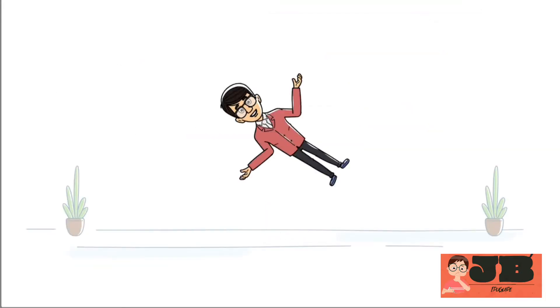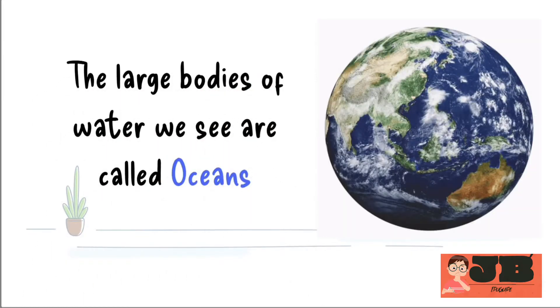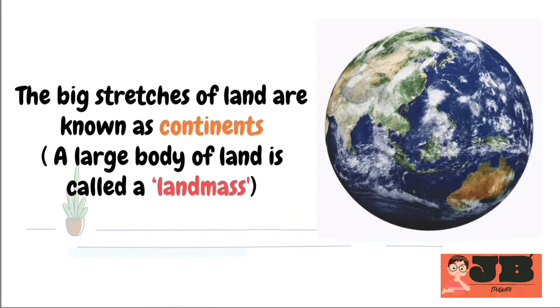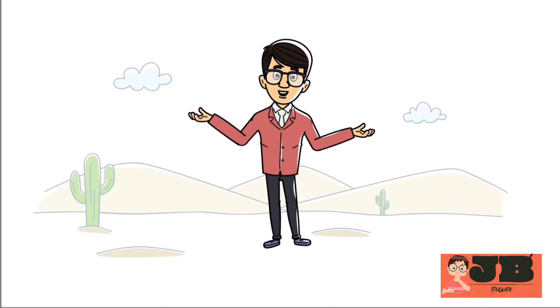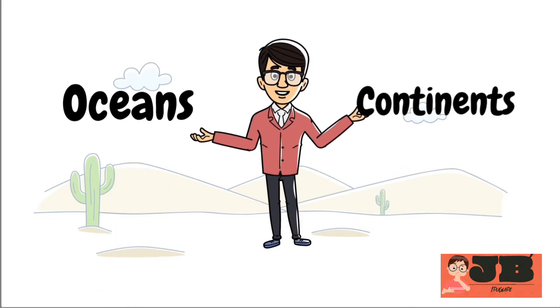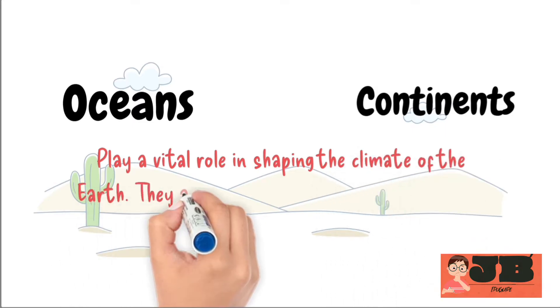Dear students, do you know the large bodies of water we see are called oceans, and the big stretches of land are known as continents? A large body of land is called a landmass. Let's understand the importance of oceans and continents. Both oceans and continents play a vital role in shaping the climate of the Earth.